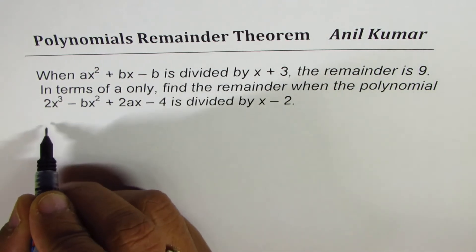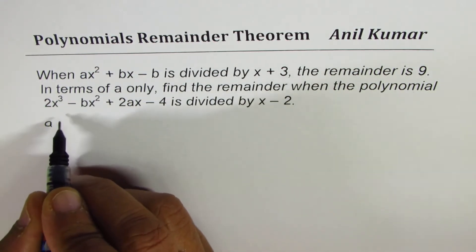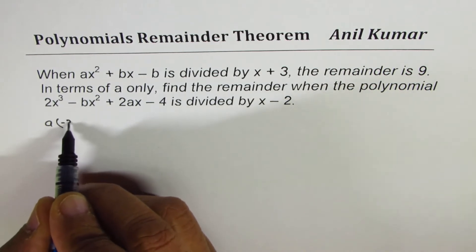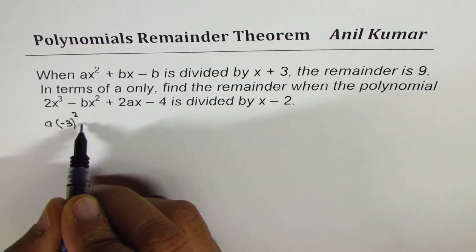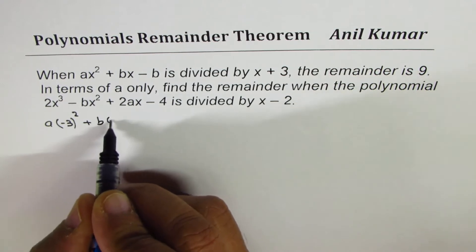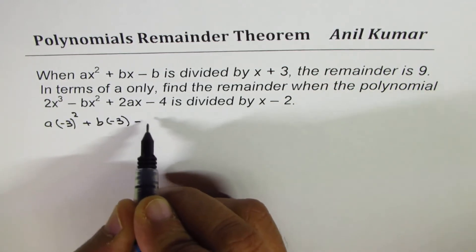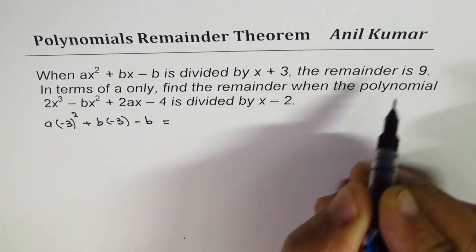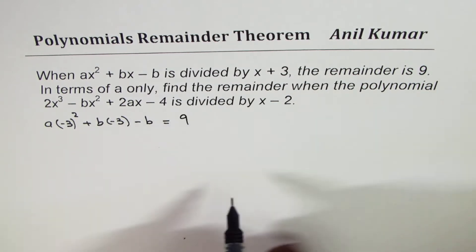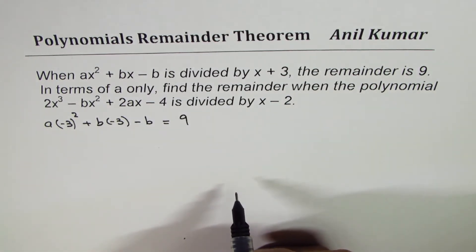So let me write down a, instead of x I'll write minus 3 square, plus b minus 3 minus b, and this value should be equal to 9. That is what we get from the remainder theorem.